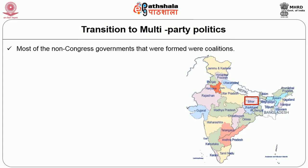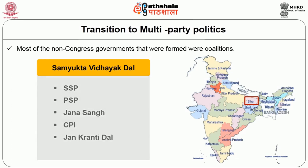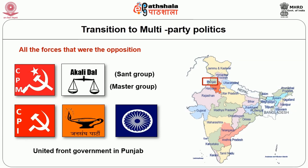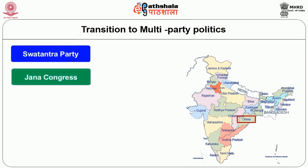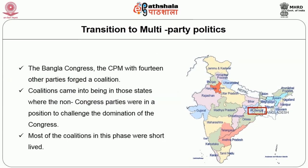For the first time in 1967, non-Congress parties came together and formed coalitional governments. In Bihar, the Samyukta Vidhayak Dal (SVD) was formed consisting of SSP, PSP, Jana Sangh, CPI, and Jan Kranti Dal. In Punjab, CPM, Akali Dal, Akali Dal Master Group, CPI, Jana Sangh, and the Republican Party formed the United Front government. In West Bengal, Bangla Congress, CPM, and 14 other parties formed a coalition — all driven not by common ideology but by anti-congressism.